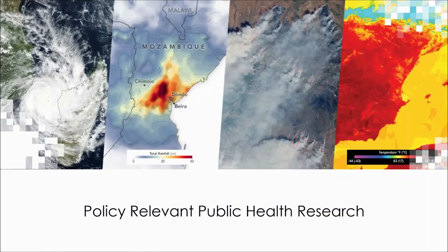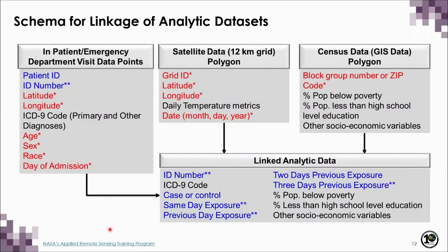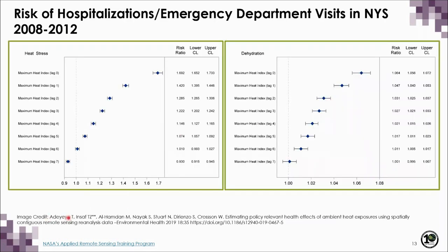The next section will highlight how we've used these data in research that has led to enhancements of public policy. We used spatial or geographic linkage of health data sets to these air temperature data, and we also linked some census socio-demographic data. This was discussed in detail in our previous RSET presentation, and I'm going to be presenting the results here.